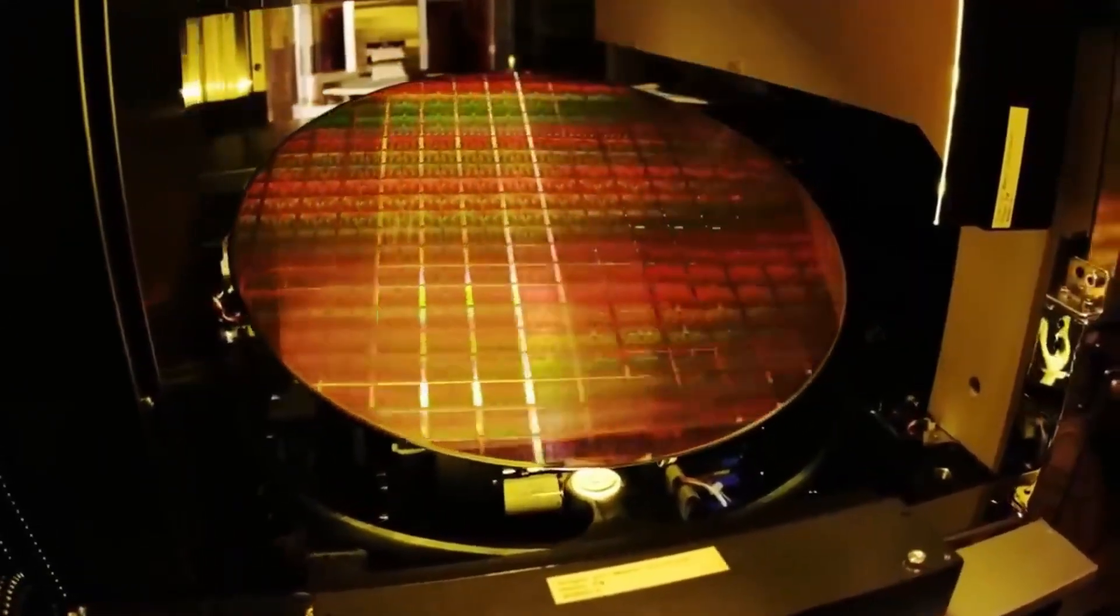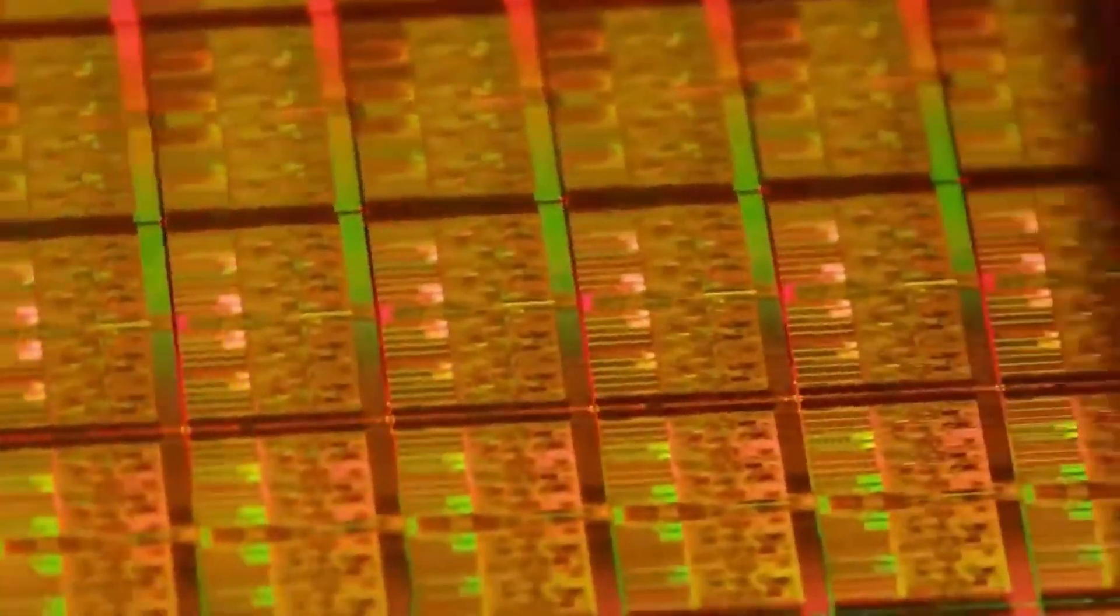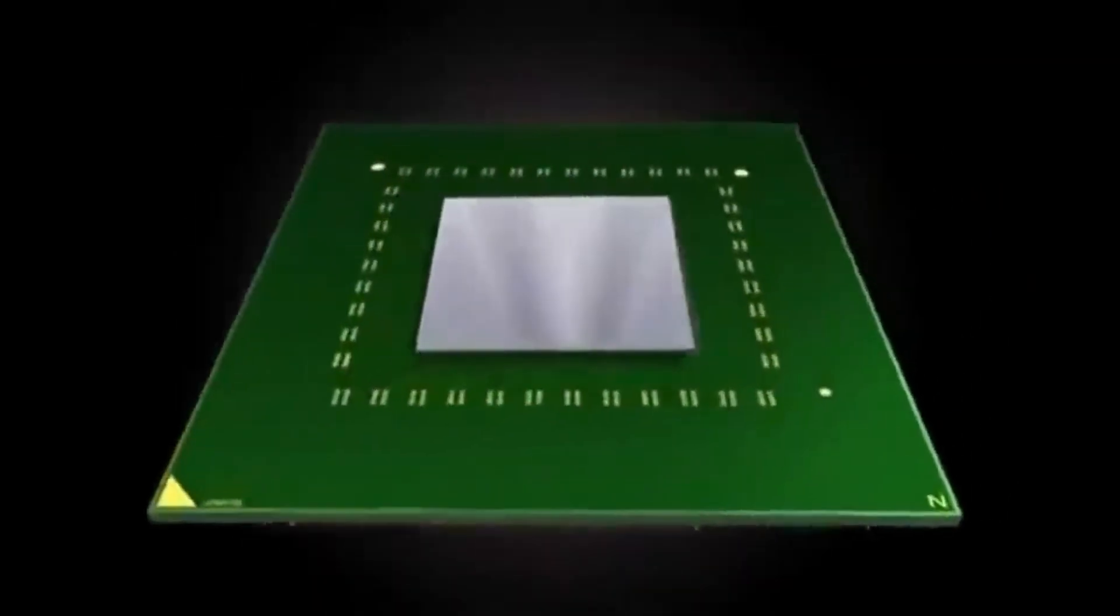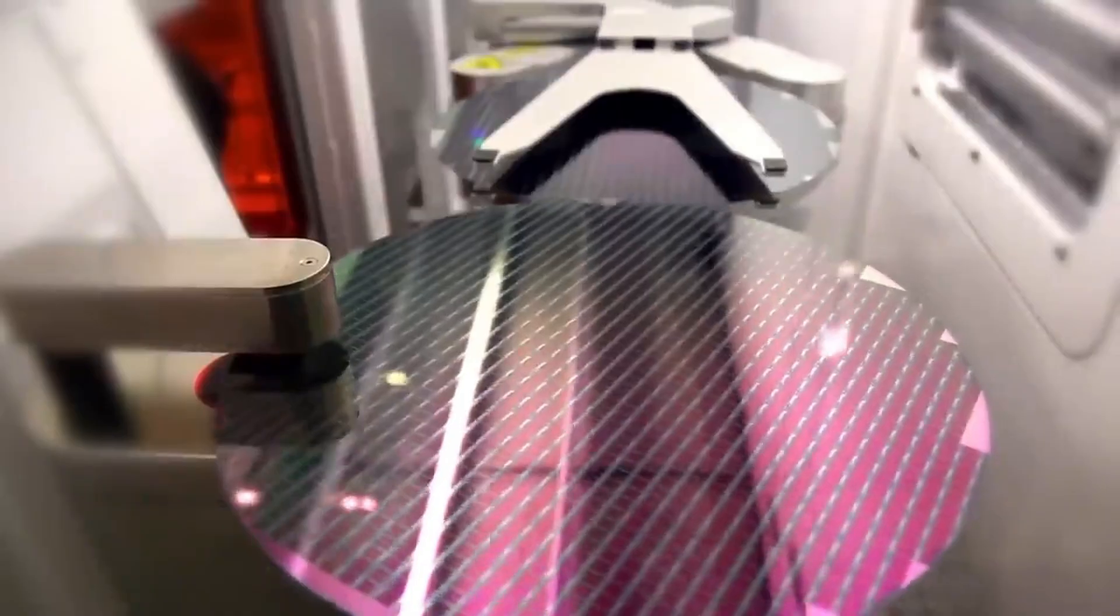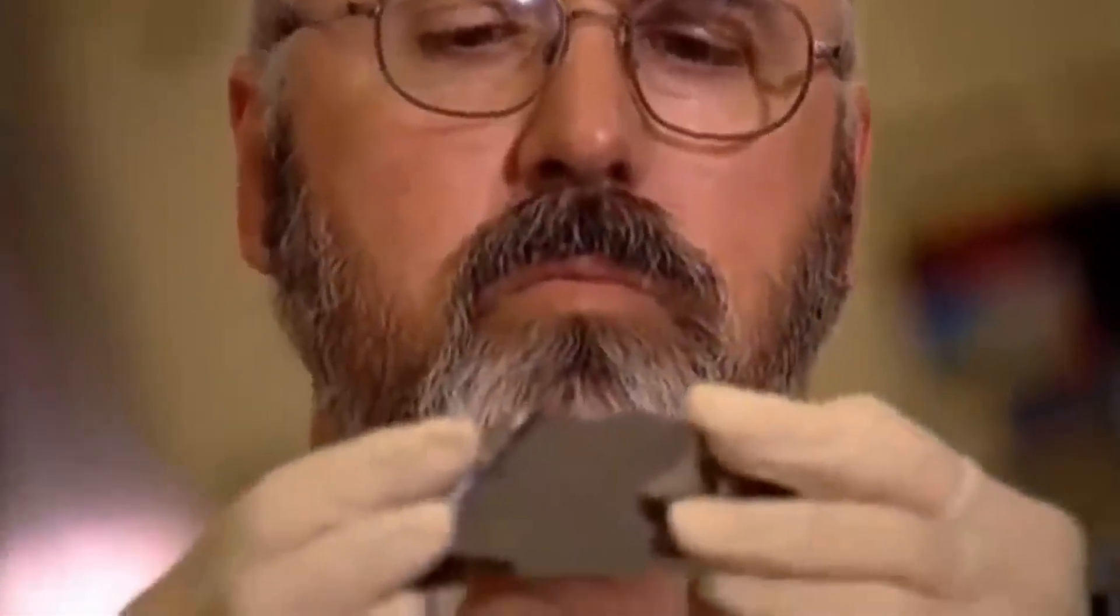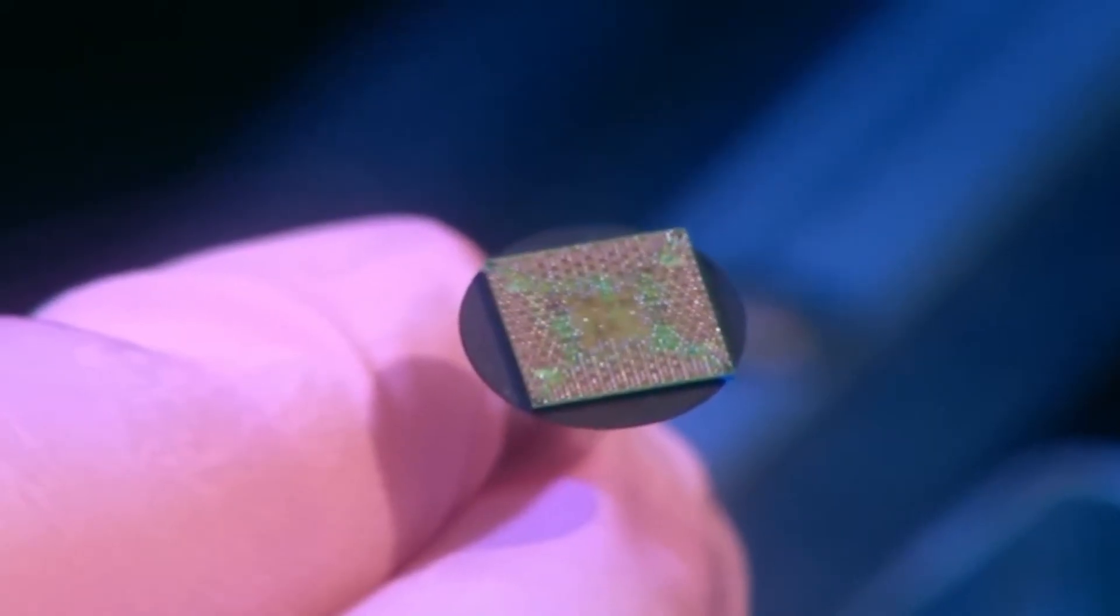At first glance, it seems insignificant, but without it, much of our modern life simply would not exist. So how is a microchip made? To find out, let's visit a modern semiconductor factory and see, step by step, how something as simple as a handful of sand becomes the brain of our everyday technology.